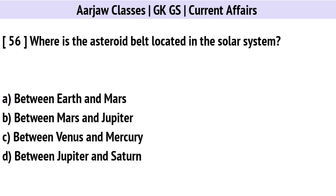Where is the asteroid belt located in the solar system? Correct option is B: Between Mars and Jupiter.